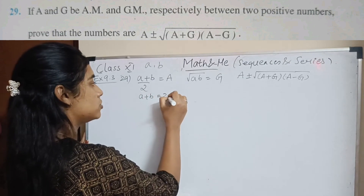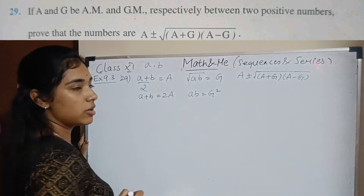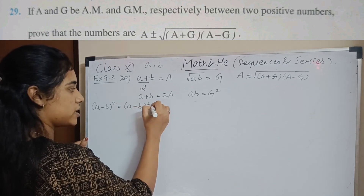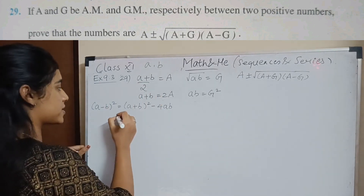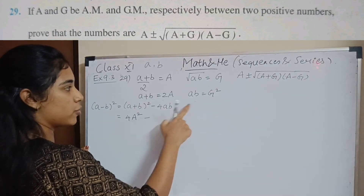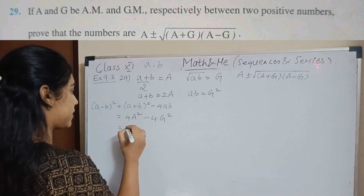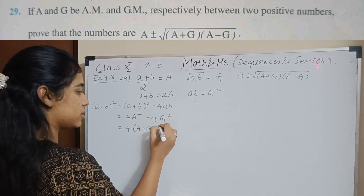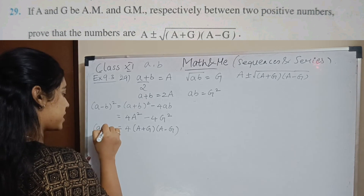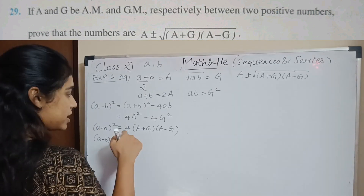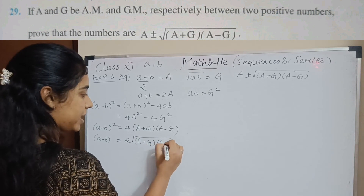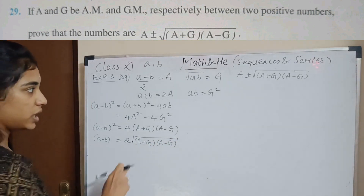We have A plus B equals 2A and AB equals G squared. The trick is: (A minus B) squared equals (A plus B) squared minus 4AB. Substituting, we get (2A) squared which is 4A squared minus 4G squared. Taking 4 outside gives (A+G)(A-G), so (A minus B) squared equals (A+G)(A-G), meaning A minus B equals root of (A+G)(A-G).